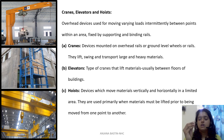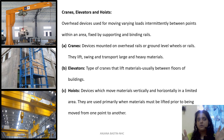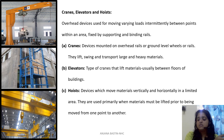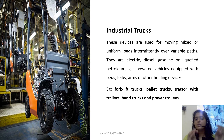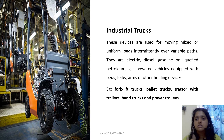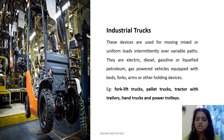These three — cranes, elevators, and hoists — are normally overhead, lifting up something and placing it somewhere, whereas the conveyor shows normal horizontal movement. Industrial trucks are operated by a person or move on a pre-programmed system where the task and movement path are fed into the system. Some are also manpowered. These can be electric, diesel, gasoline, or any other liquefied petroleum or gas powered vehicles. Examples include forklift trucks, pallet trucks, tractors with trailers, hand trucks, and power trolleys.